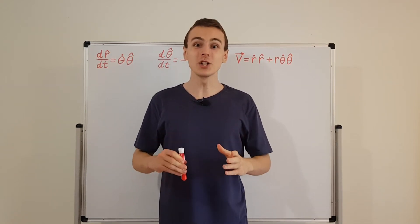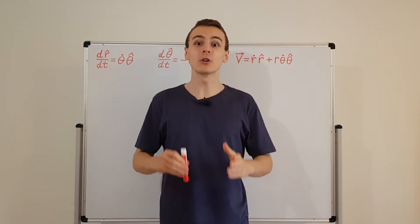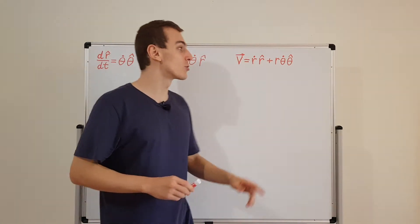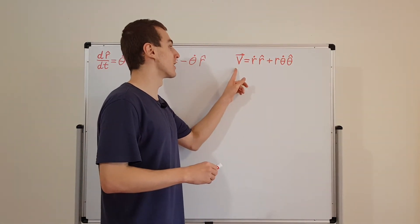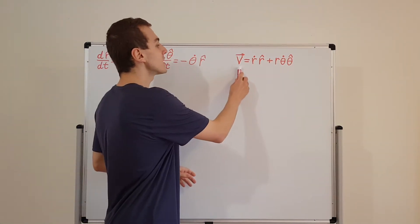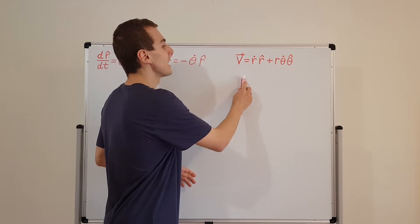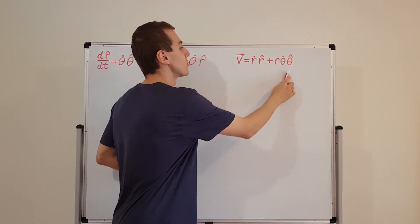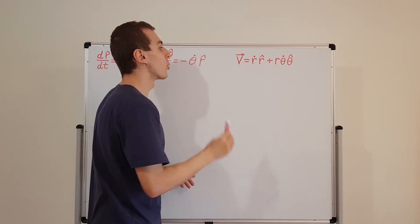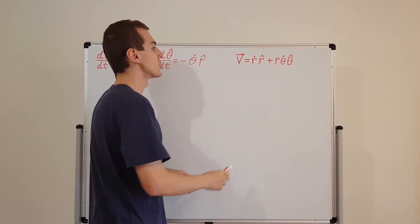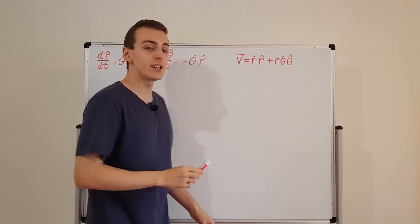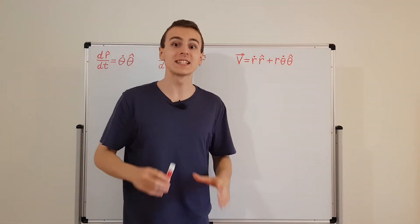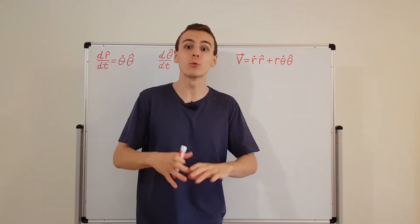Let's examine acceleration in polar coordinates. In the previous video I derived an expression for the velocity vector in terms of r-hat and theta-hat, the unit vectors we're using for polar coordinates. What I'm going to do in this video is do the same thing but for the acceleration vector, which is a little more complicated.